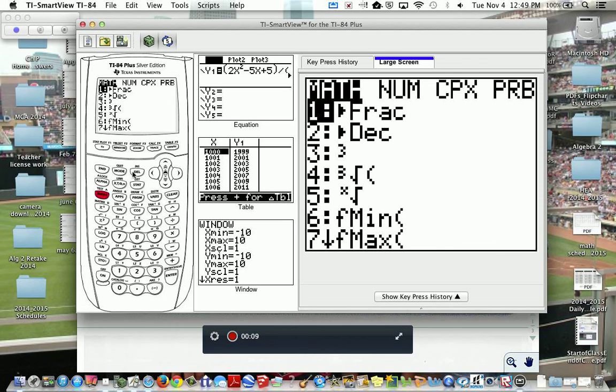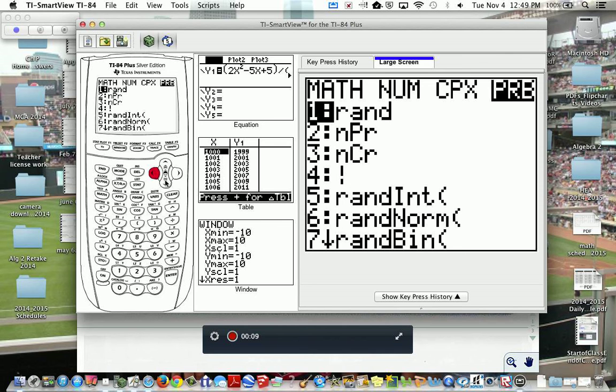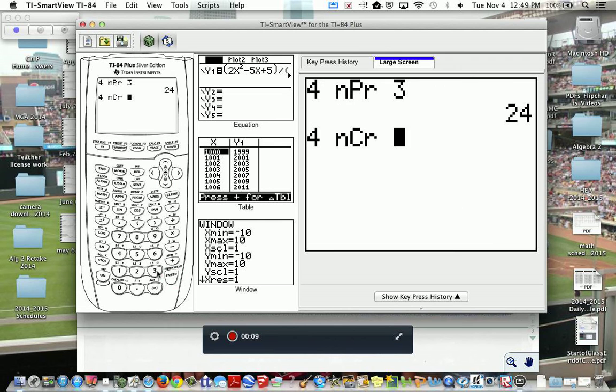or tell the pizza place what topping is first. They're just going to put the three toppings on, and so that one is similar. Four, math, slide over the probability menu, go down and select number three, which is the combination, and then you say three. Now, because order doesn't matter, we don't have as many ways to do this, and so it's a significantly lower number.